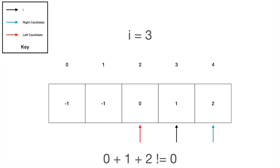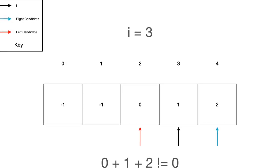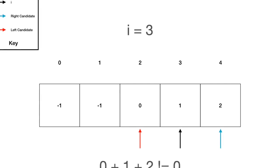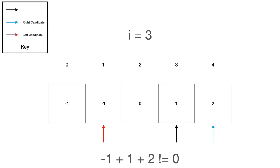I now becomes three, and zero, one, and two sum to three, which is larger than our target of zero, so we decrement the left candidate. Unfortunately, our sum is still larger than zero, meaning that we once again decrement the left candidate. Same is true, that the sum is larger than zero, so we decrement the left pointer, and it's out of the bounds of the array.